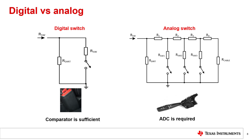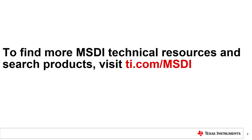An ADC is needed to accurately measure the voltage drop across the switch for comparison against multiple configured thresholds to determine the switch's current position. The TIC12400Q1 and the TIC12400 have both comparator and ADC options for each input channel and can be used with either type of switch, but the TIC10024Q1 only has a comparator and can only be used to detect digital type switches.